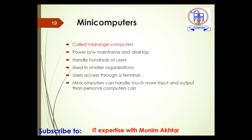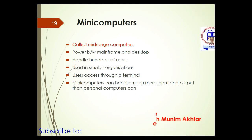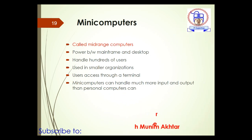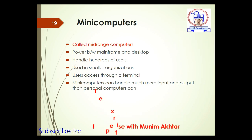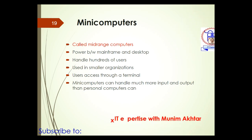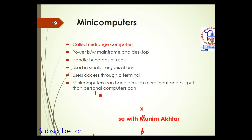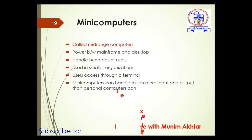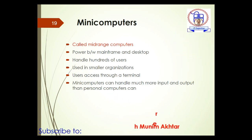The mainframe is the second most powerful system after supercomputers. Next is mini computers, also called mid-range computers — they have power between mainframe and desktop computers. Mini computers can handle hundreds of users at the same time, whereas mainframes handle thousands. They are used in small organizations with around 100 to 200 users.